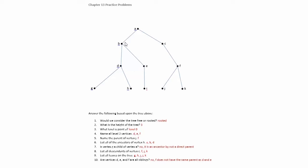So they're not going to be siblings. D and E are going to be siblings, but F would not be a sibling of that since the parent of F is C.